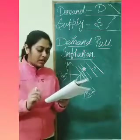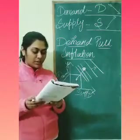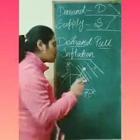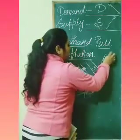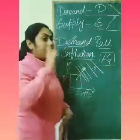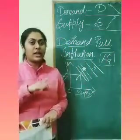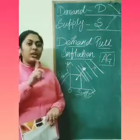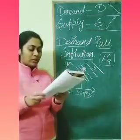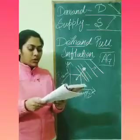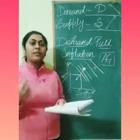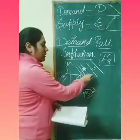Aggregate demand, also known as AD, refers to the total demand for goods and services in the economy. We discussed aggregate demand in the previous class. Total demand may increase due to increasing consumption expenditure — for example, if everyone wants and consumes chocolates, the demand for chocolates increases.